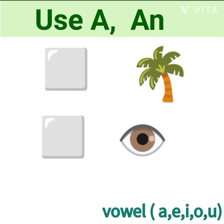Use A or AN article before the given figure. Where we use A? A comes before the consonant and N comes before the vowel. Which are vowels? A, E, I, O, U are the vowels and other letters are consonant.